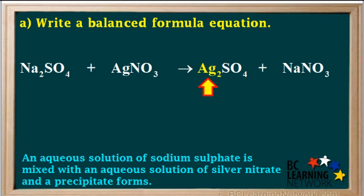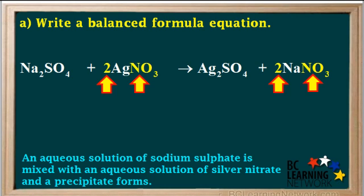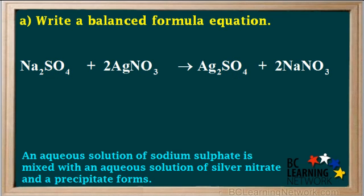Now we need to balance the equation. There are two Ag's on the right and only one Ag on the left, so we put a 2 in front of the AgNO3. Now we have two silver atoms on both sides. There are two Na's on the left and only one Na on the right, so we write a 2 in front of the NaNO3 to give us two sodiums on both sides. We now have two nitrates on both sides and one sulfate on both sides, so the equation is now balanced. Now we need to add subscripts to indicate the phases of all reactants and products.